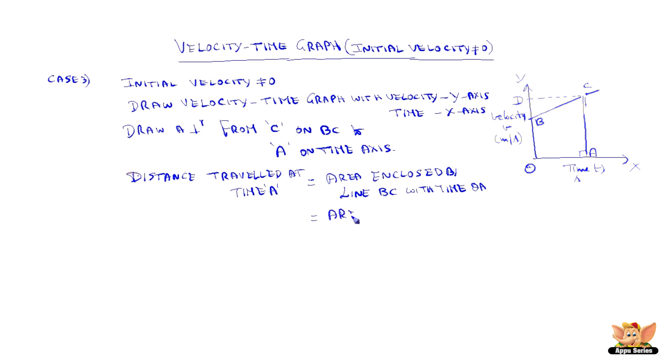So which from the graph is nothing but area of trapezium OBCA. Since O, B, C, A is a trapezium with the two parallel sides and the height.